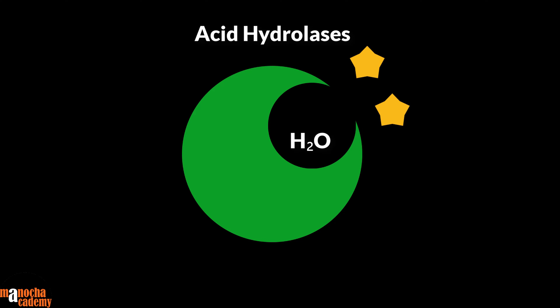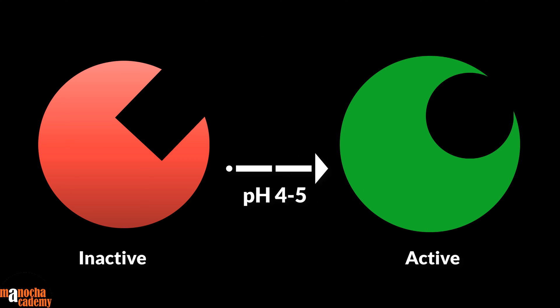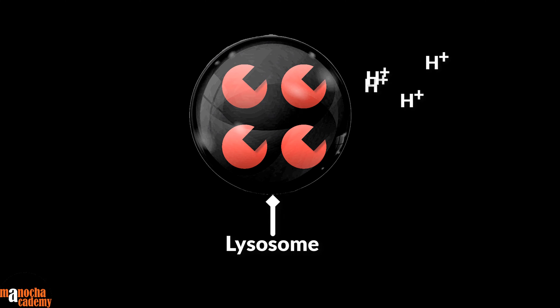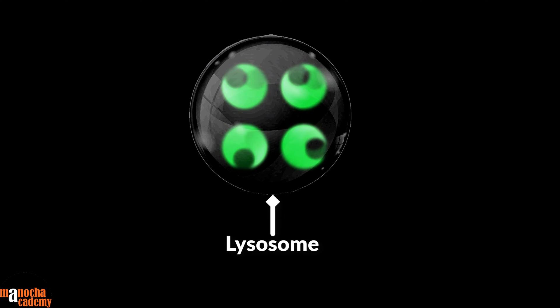Why acid hydrolases? Because these enzymes are active in an acidic pH, which ranges from about 4 to 5. The acidic medium inside the lysosome is maintained by actively introducing hydrogen ions into the lysosomes.